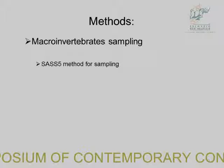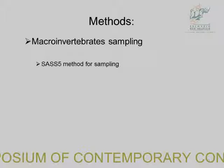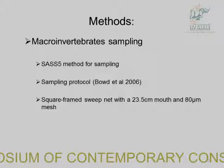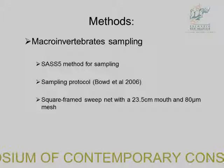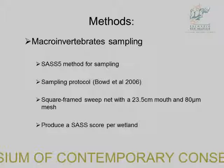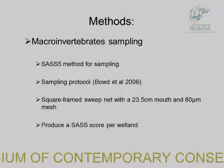To sample macroinvertebrates, I used the South African Scoring System. Although it was developed for rivers, Rebecca Roux developed a protocol that could be used in wetlands, which I followed. You use a square-frame sweep net with a 23.5 cm mouth and 18 micrometre mesh, sampling at the top, bottom, and exit point of the wetland, then sum up all samples to produce one site score.